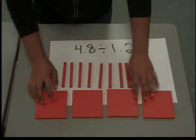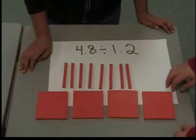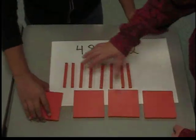First, we lay out 4.8. Next, we make one side length of 1.2.